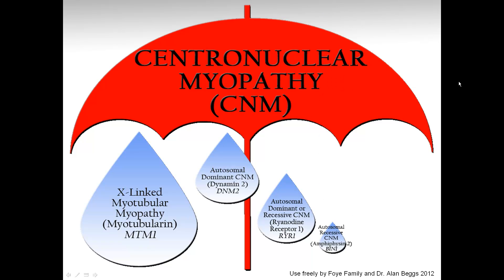The next subtype is an autosomal recessive form of CNM caused by problems with the BIN1 gene, leading to problems with amphiphysin2. The most recent addition at the time of this video is an autosomal recessive form caused by the TTN or Titin gene, causing problems with the Titin protein — this has just recently been reported in abstract form.